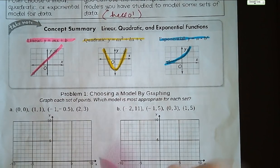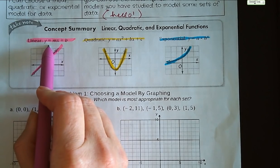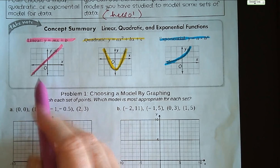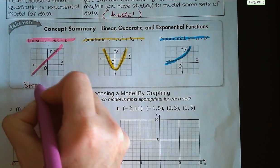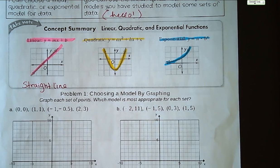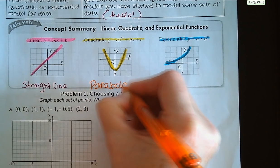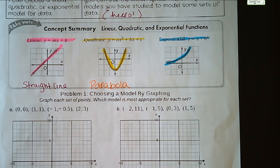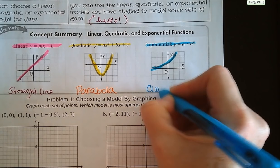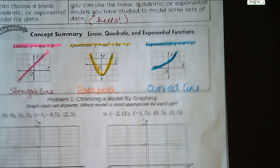All right, so our summary. Linear functions are in the form y = mx + b, slope-intercept form, and they're graphed with a straight line. Quadratic functions are in the form y = ax² + bx + c, and they are parabolas—mirrored images over an axis of symmetry. Exponentials are in the form y = a times b^x, and they're curved lines that curve in one direction.